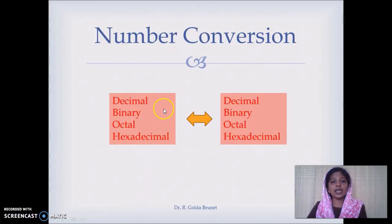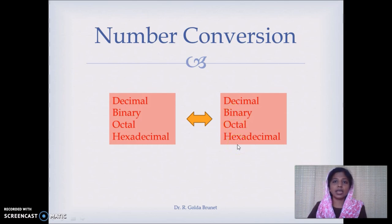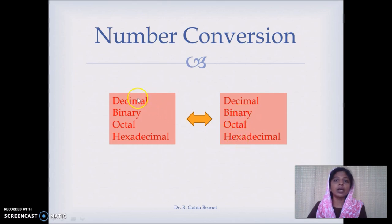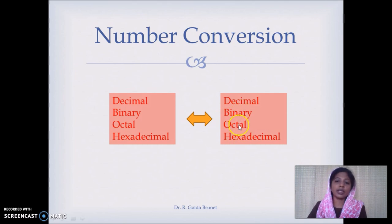In the last lecture we saw how to convert a decimal number to any other number system like binary, octal, or hexadecimal. In this lecture, given any number in binary, octal, or hexadecimal, we will convert it to an equivalent decimal number, and also cover binary to octal, binary to hexadecimal, hexadecimal to binary, octal to binary, octal to hexadecimal, and hexadecimal to octal.